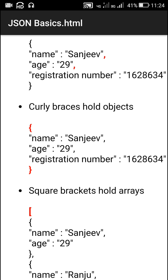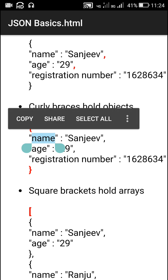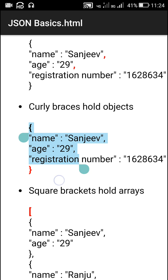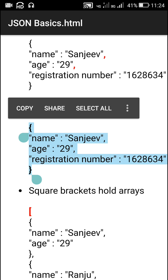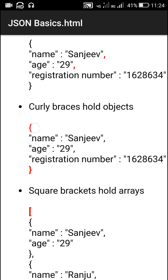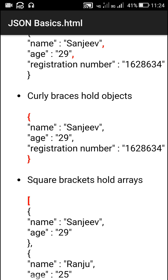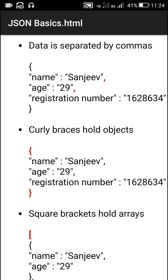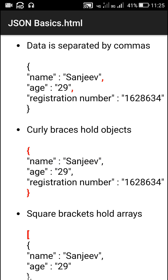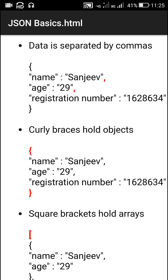Next, curly brackets hold objects in JSON. This is a JSON object and it is held within curly brackets — you can see these curly brackets highlighted in red. Anything inside these curly brackets makes one JSON object, and it contains three different key-value pairs.